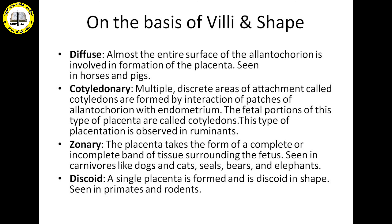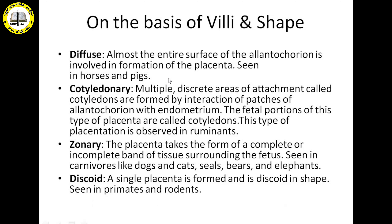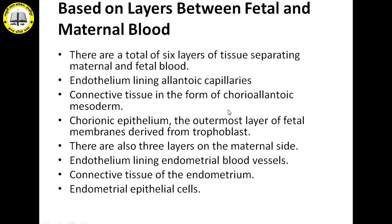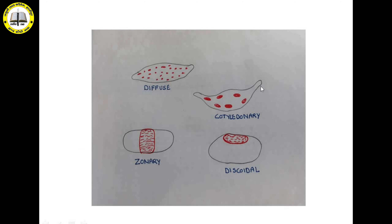Now the second type of classification is on the basis of villi structure and shape. First is diffuse type of placenta, in which chorionic villi are developed all over the surface — present in horses and pigs. Second is cotyledonary type of placenta, developed in ruminants. It forms tufted patches — small villi structures distributed not all over the surface but in bundles at specific locations, which we call cotyledons. That is why this placenta is known as cotyledonary placenta.